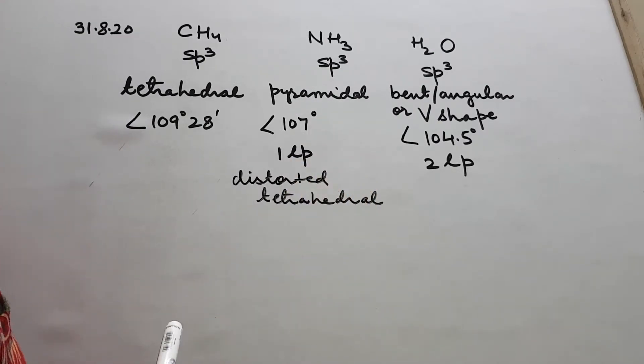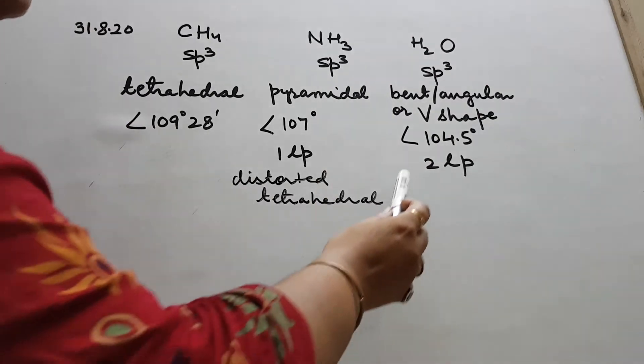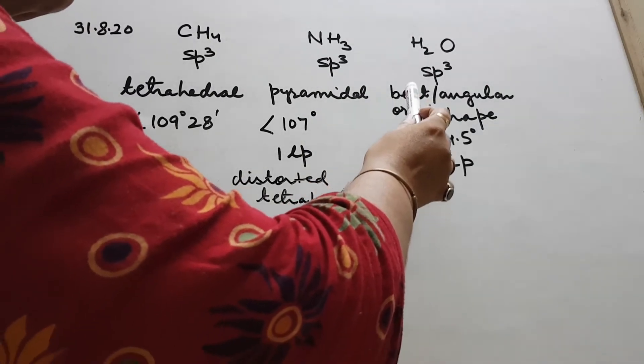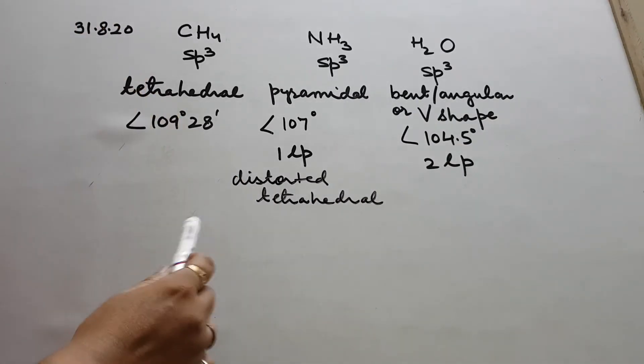In case of water we have two lone pairs, hence the shape is bent or angular or v-shaped. When we have proper tetrahedral with sp3 and no lone pair, the angle is 109 degrees 28 minutes.